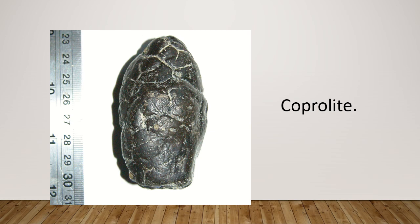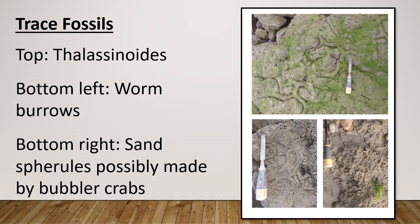Here's a fossil coprolite, which is a fossilised poo — you can see this on display at Folkestone Museum. On this page we've got some trace fossils. Trace fossils are the remains of evidence of the activity of ancient life: animals making burrows, things walking around making trackways, or potentially bite marks in bones and shells.